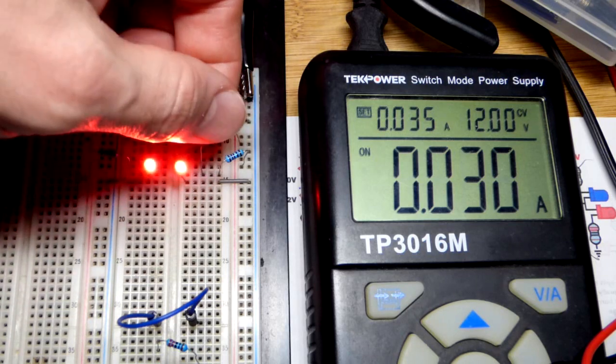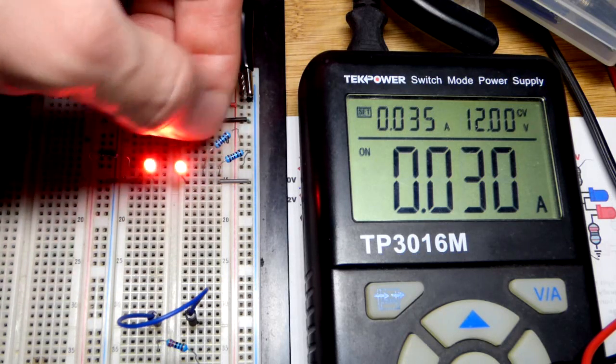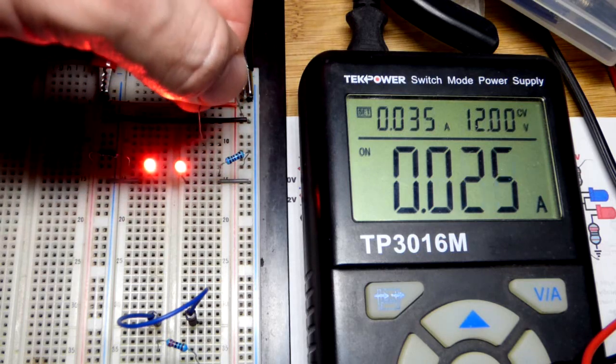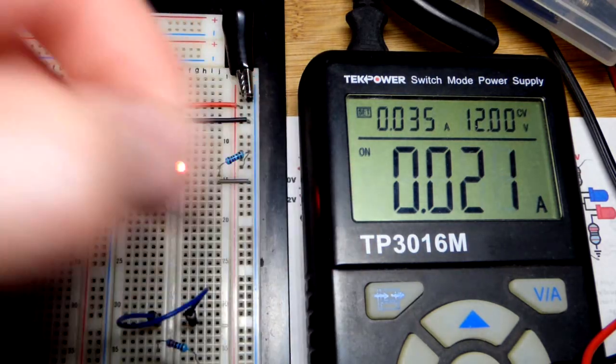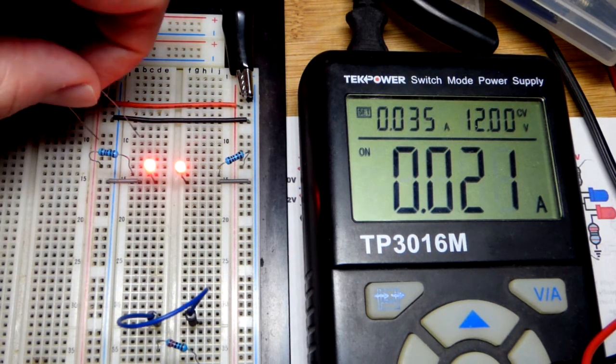And we can prove that by pulling this resistor. Watch that LED, it'll get dimmer. The resistor is hot and now we're down to 20 milliamps of current.